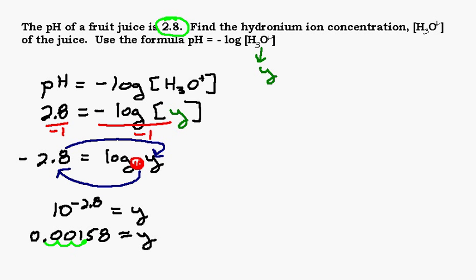So I'm going to round this to one point something. That 8 is going to round that 5 up to a 6. And in scientific notation then, that would be 1.6 times 10 to the negative third power.